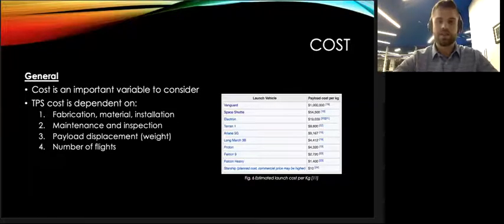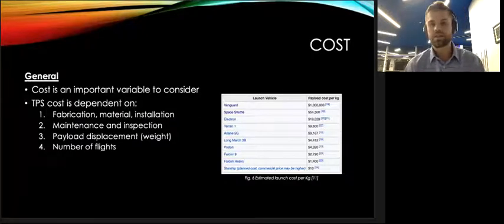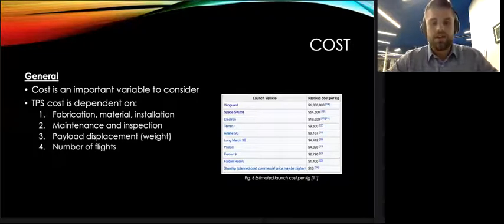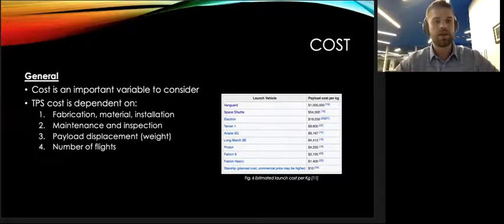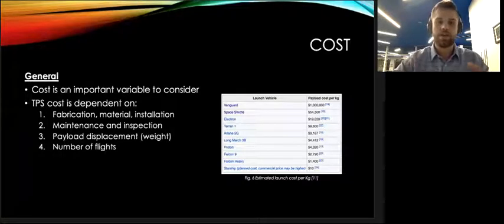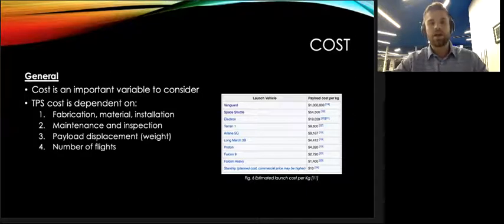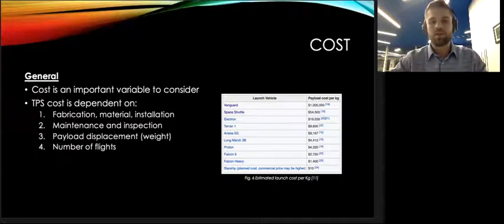Now moving onwards to cost. Cost is obviously a very important variable to consider because we're going to space. This is something that's not cheap. It's very hard to get there. You can see with legacy space vehicles, it was very expensive, upwards of a million dollars for the Vanguard. But you can see as time has gone on, space has reduced in cost per payload kilogram. TPS cost is often dependent on fabrication, material and installation. So manufacturing costs, materials and inspection. That's very important for reusable materials, along with the number of flights seen. And then finally, payload displacement or the weight of the thermal protection system also directly affects costs.